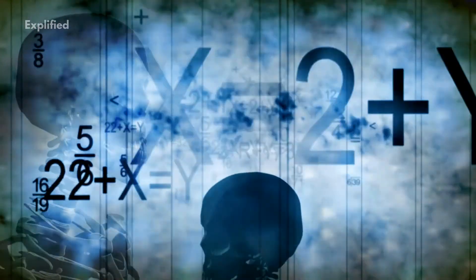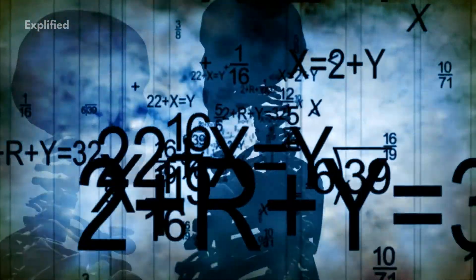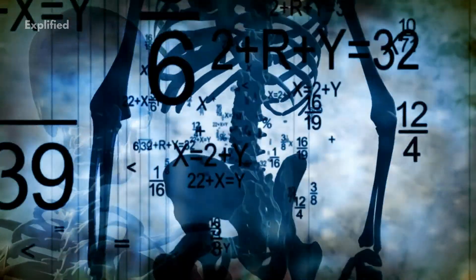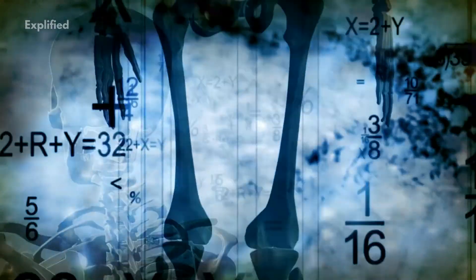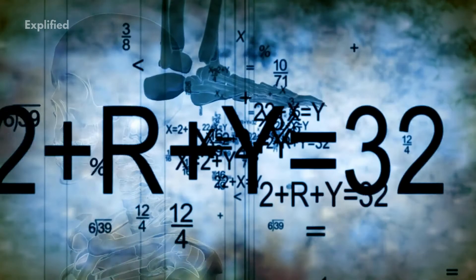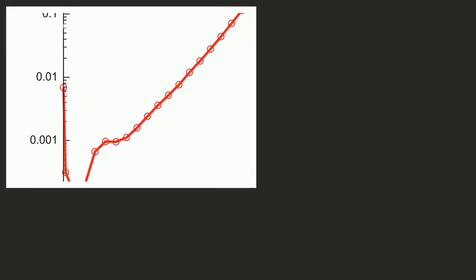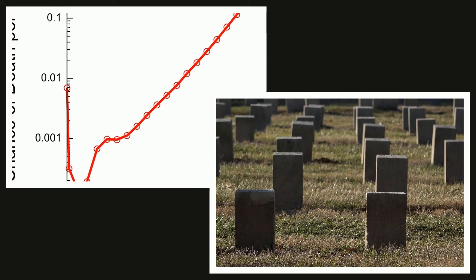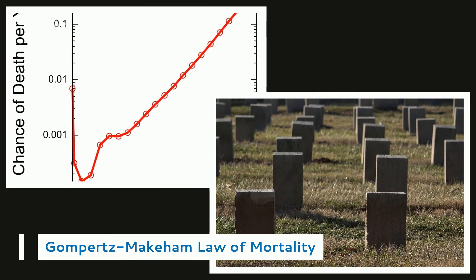The law can be used when the Gompertz law doesn't hold true, and the law is known as Makeham's law. This generalized law of mortality can successfully describe the age dynamics of human mortality. That's why the Gompertz and Makeham's law is recognized as the Gompertz-Makeham law of mortality.